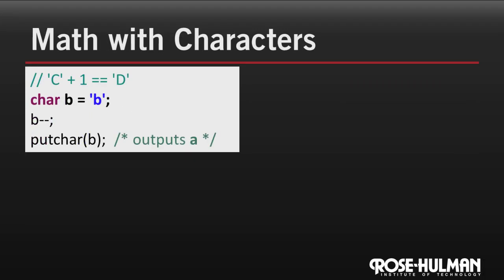Since characters are just numbers, c plus 1 is the same as d, and we can modify char variables just like int variables. This example actually outputs a lowercase a, one character before the lowercase b.